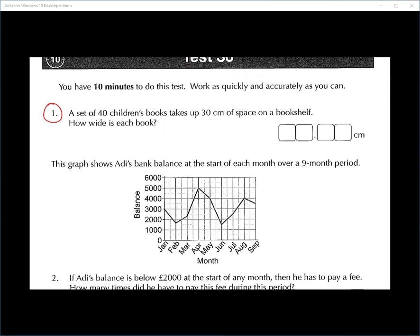Question number one. Hamza, do you want me to question number one, please? A set of 40 children's books take up 30 centimetres of space on a bookshelf. How wide is each book? So what do we have to do? We know that 40 of the books have a width of 30 centimetres, and we want to work out for each book, so how do we get from 40 down to 1?